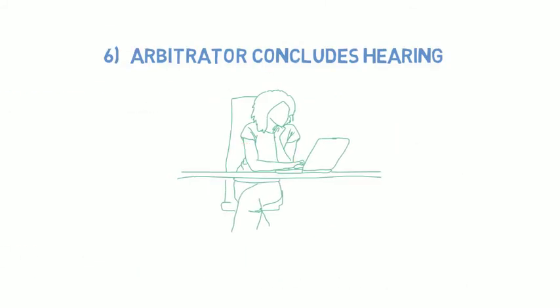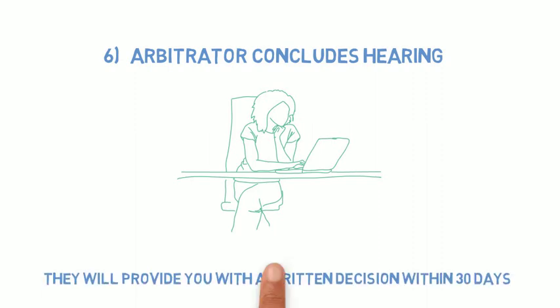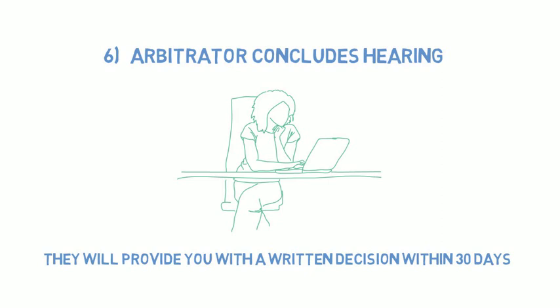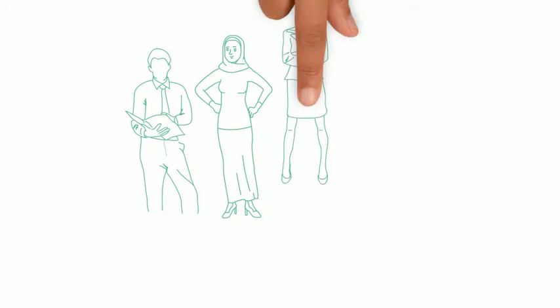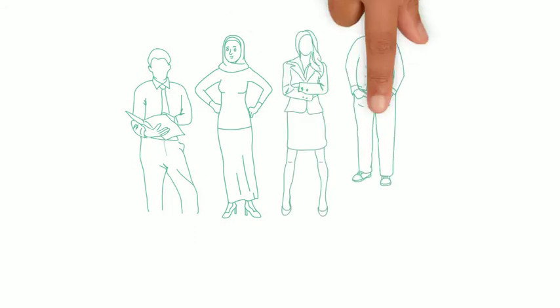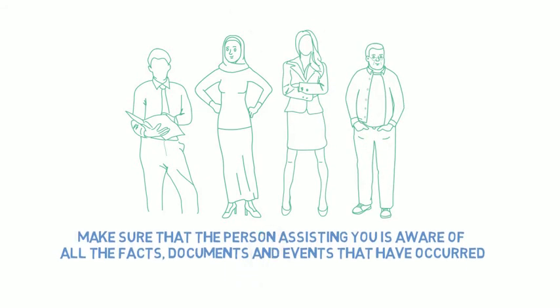Step 6: When the hearing is over or the arbitrator has heard enough evidence, they will conclude the hearing and will provide you with the written decision within 30 days. You may have someone else represent you at the hearing, like an assistant, advocate, or lawyer. Make sure the person assisting you is aware of all the facts, documents, and events that have occurred.